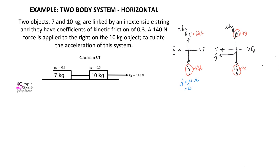The coefficient for each of these objects is 0.3. The normal force for the 7 kilogram object is 68.6 newtons, which tells us that the frictional force for this object is 20.58 newtons. The frictional force for the 10 kilogram object is 29.4 newtons, using the same calculation but a different normal force.